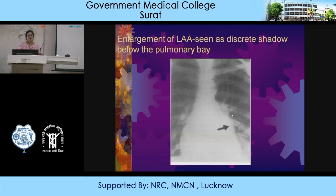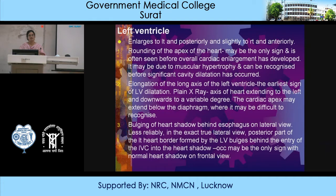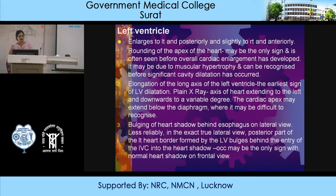Left ventricular enlargement: the left ventricle enlarges to the left and posteriorly, and slightly to the right and anteriorly. Signs include rounding of the apex of the heart formed by the left ventricle — this may be the only sign and is often seen before overall cardiac enlargement has developed. It may be due to muscular hypertrophy and can be recognized before significant cavity dilatation. Elongation of the long axis of the left ventricle is the earliest sign of left ventricular dilatation — the axis of the heart extends to the left and downwards, and the cardiac apex may extend below the diaphragm.